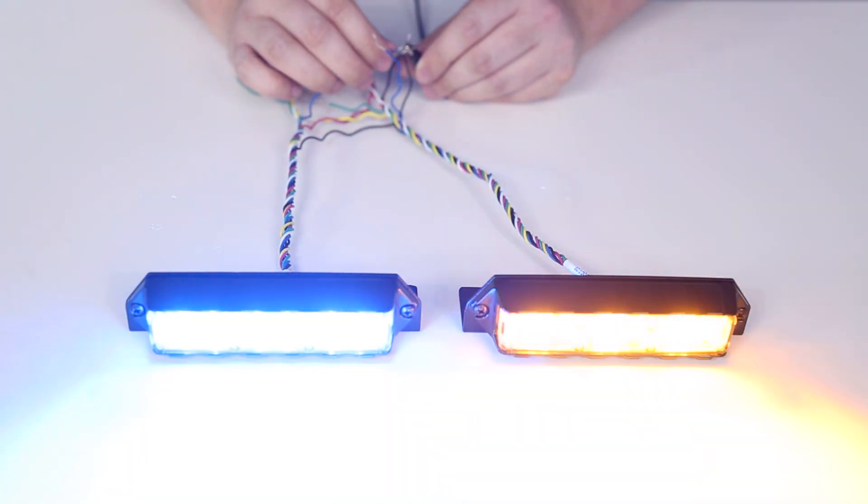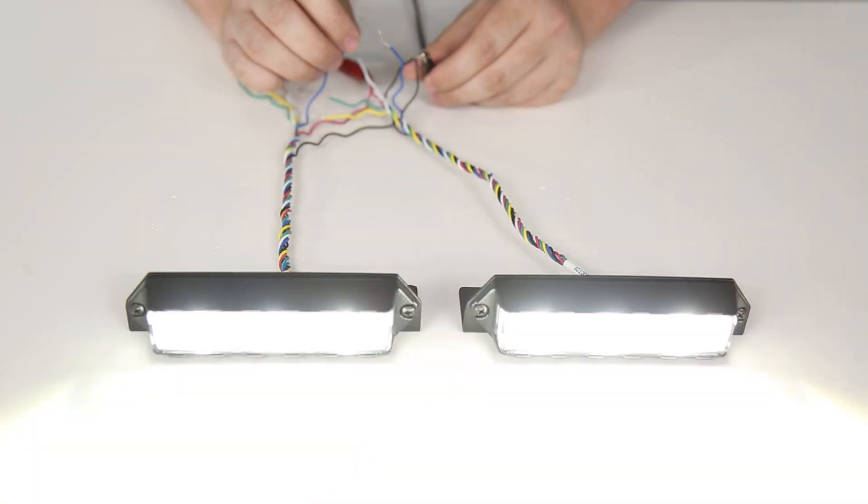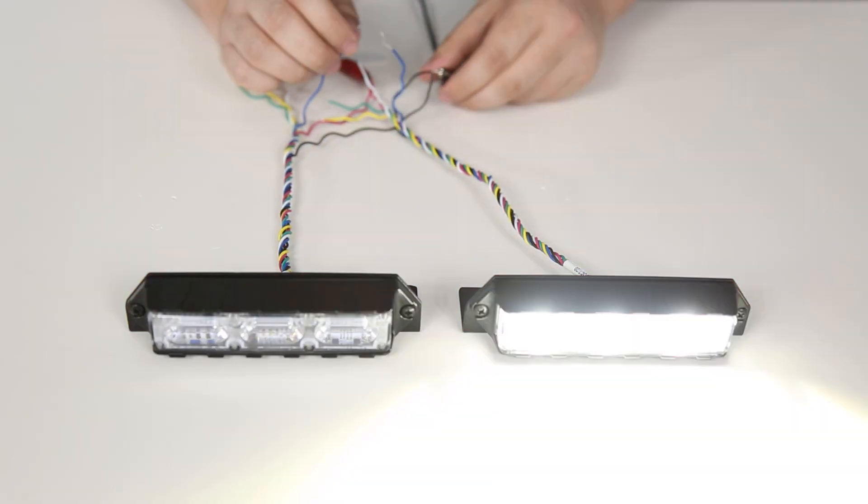The lights in your Quad will momentarily light up a steady blue to indicate that they are now the leader lights, or a steady red for follower lights.